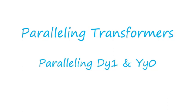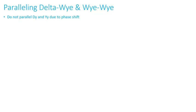In this video I'll continue the discussion on parallel transformers. I'll show what happens when you parallel a delta-y and yy transformer where you have a phase shift between the two. You don't want to parallel delta-y and yy due to the phase shift. For instance, let's assume we have two transformers: one connected as delta-y1 where the high side is delta, low side is y, and the high side leads the low side by 30 degrees. The other is yy0, meaning the high side is grounded y, the low side is grounded y, with no phase shift.